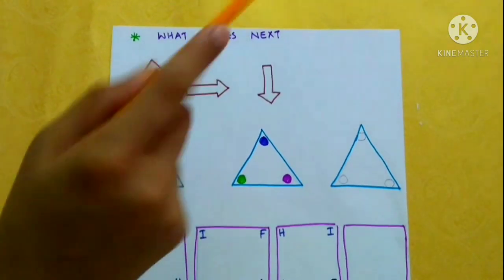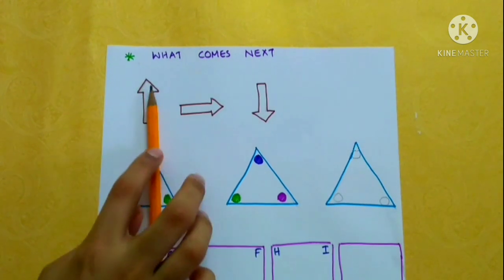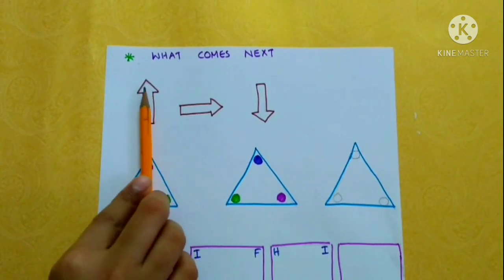What comes next? So explain this to kids. Consider this as the arrow, it's pointing upward.